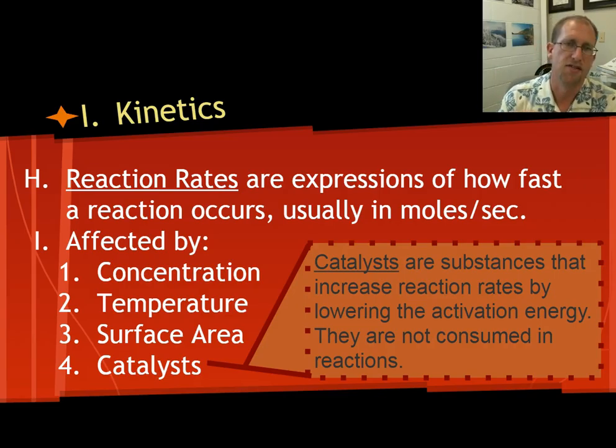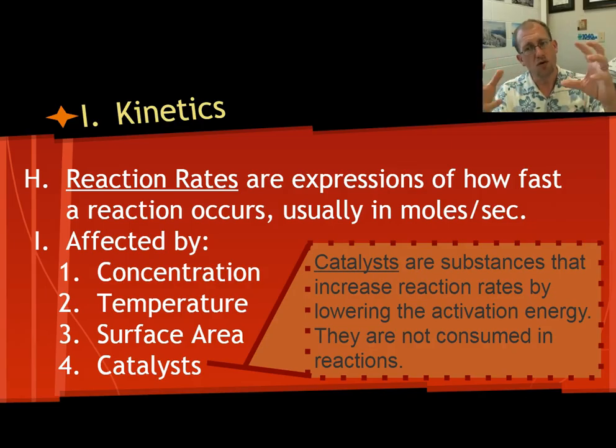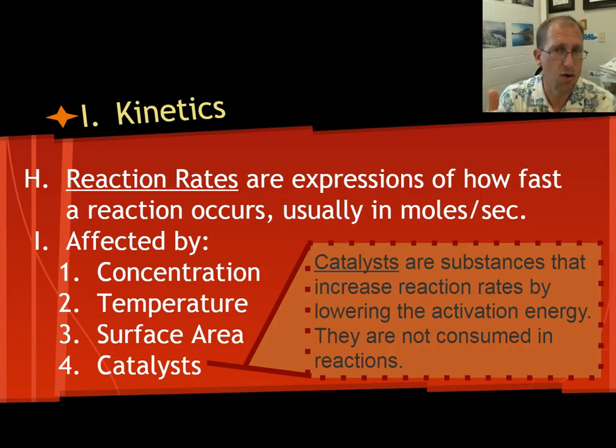And then catalysts. Catalysts act by prearranging collisions so that they happen in the right orientation. And so the part of the slowdown for chemical reactions is that they're not in the right orientation. Catalysts fix that. They reorient things before they collide. Catalysts are substances that increase reaction rates by lowering the activation energy and are not consumed in chemical reactions. So you get the catalyst back when you're done.